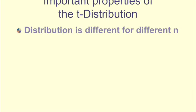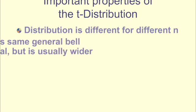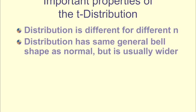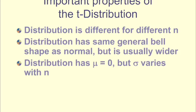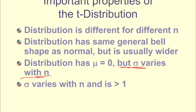So let's talk about some important properties of the student's t-distribution. The distribution is different for different n. It's going to change based on our degrees of freedom. The distribution has the same general bell curve as a normal distribution, but it's usually a little bit wider. And the distribution has a mean equal to 0, but the standard deviation varies with n.